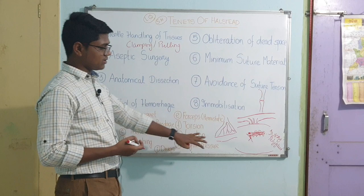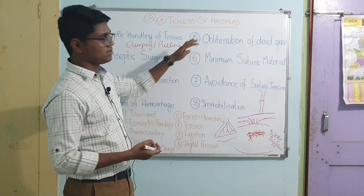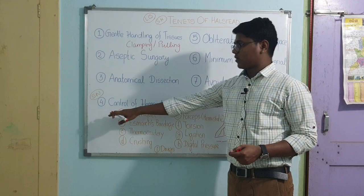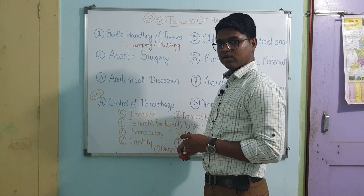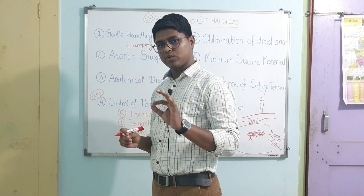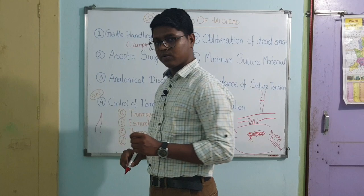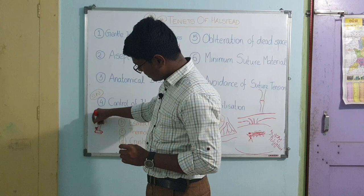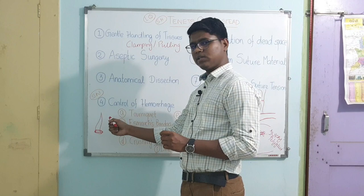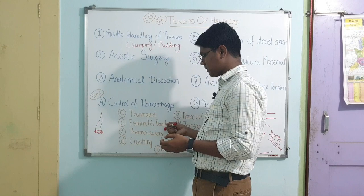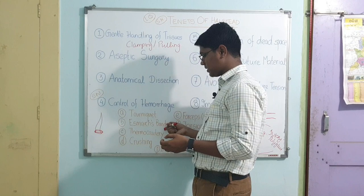Next, control of hemorrhage — this can come as a short note in your examination. First method is tourniquet: when you are doing surgery of extremities like paw or tail, you can use a tourniquet. For example in caudectomy, you apply a tight rope or tourniquet around the base of the tail to reduce blood flow. Next is the Esmarch bandage — similar to a tourniquet but the width of the bandage is more. In tourniquet the width is very less; in Esmarch bandage the width is more, but both serve the same purpose.